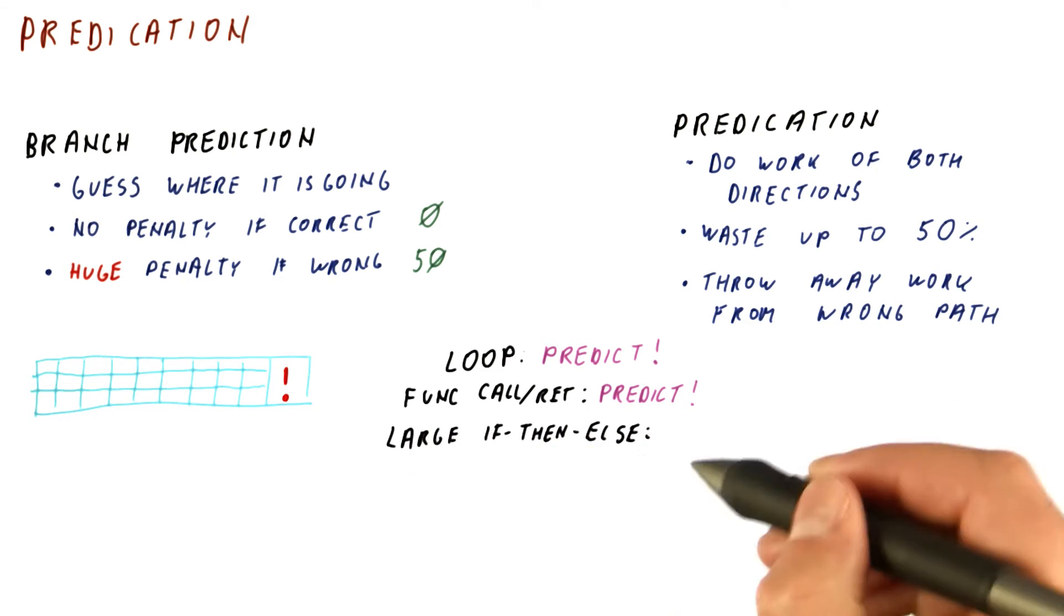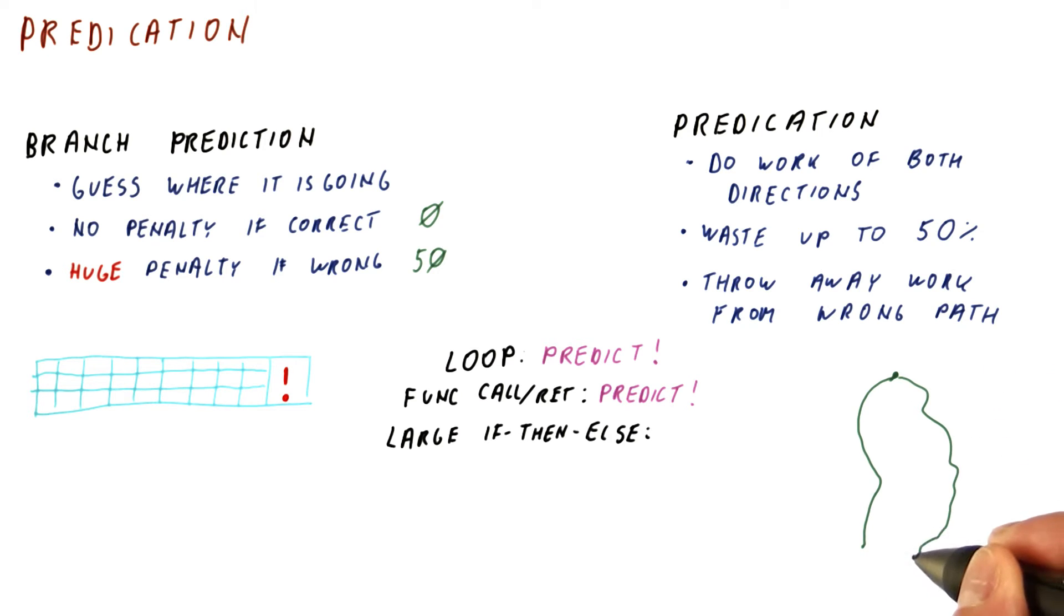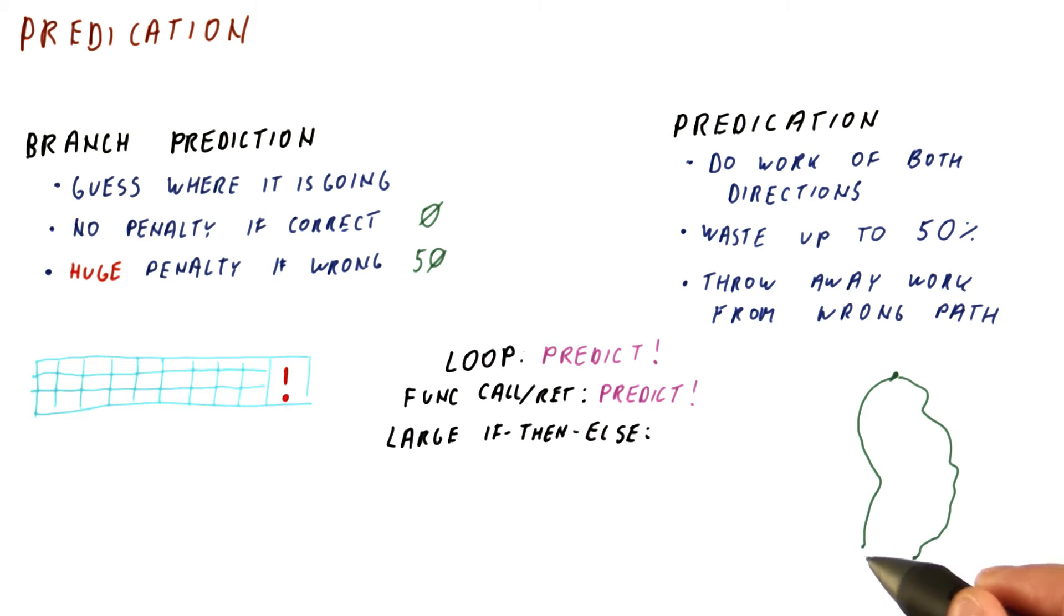Let's say now we have a large if then else. So what happens, we have a decision. And based on it, we do this or we do this. Now the question is, should we try to predict this decision or predicate so that we are doing the work of both? And eventually they will merge and we continue.